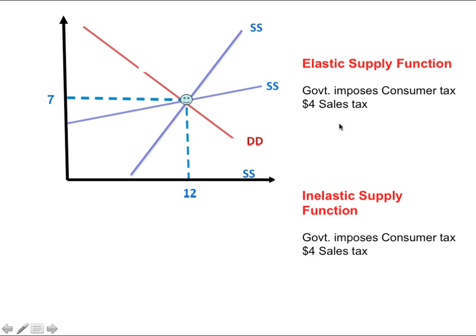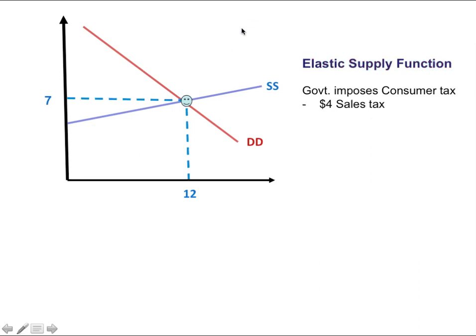We're going to look at two different cases: what happens when a sales tax is imposed in a case when we have an elastic supply function, and in a case when we have an inelastic supply function. Let's start with the first case when we have an elastic supply function SS.